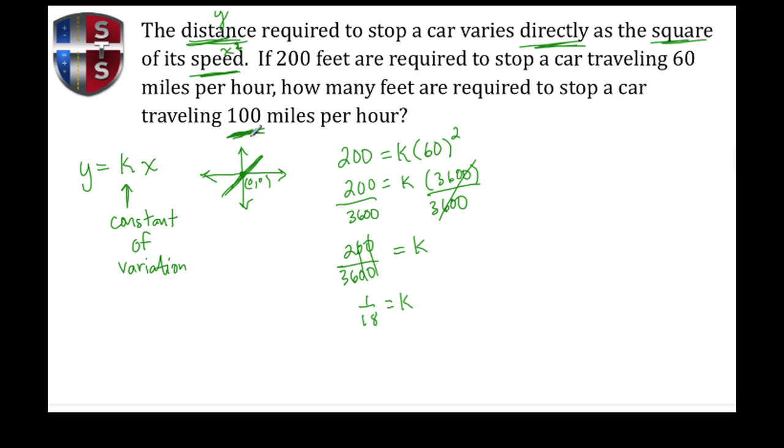Now we don't know y which is the distance. We have our constant of variation which is 1/18, and we now have the speed again which is 100 miles per hour. So now we're going to do 100 squared. So 1/18 times 100 squared.